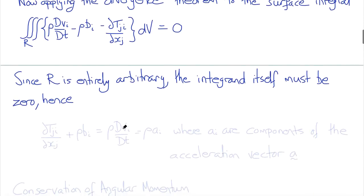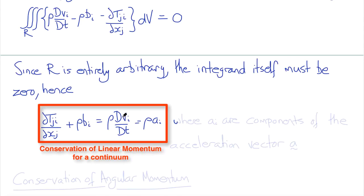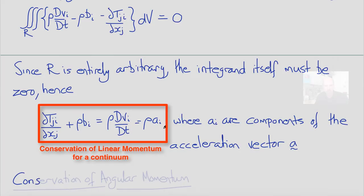Hence we obtain the familiar differential form of the conservation of linear momentum: del TjI del xj plus rho bi, these are the two terms we already derived in the equilibrium equation, equal rho times material derivative with respect to time of velocity, which is the acceleration, so rho times acceleration, where ai are components of the acceleration vector. Surface forces plus body forces equals inertial forces.